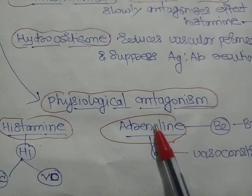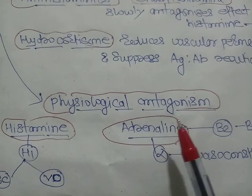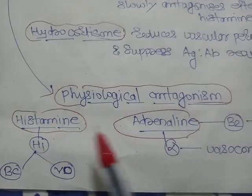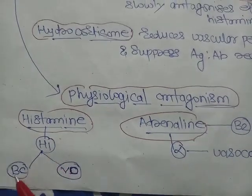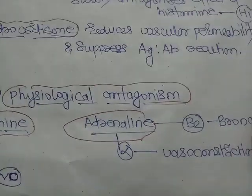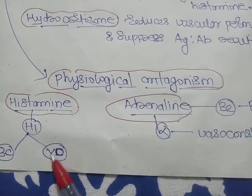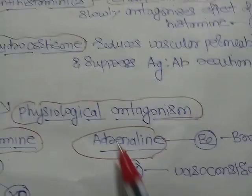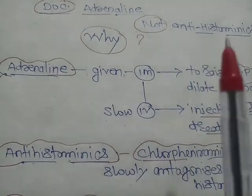They produce opposing effects on the same physiological system. When histamine acts on H1 receptors on bronchial smooth muscle, it produces bronchoconstriction; adrenaline produces bronchodilatation. Histamine causes vasodilatation, while adrenaline acting on alpha receptors causes vasoconstriction. So adrenaline acts as a physiological antagonist by acting on a different receptor, and that's why it is the drug of choice in anaphylactic shock.